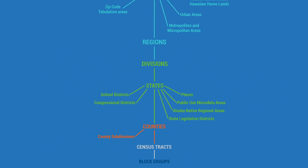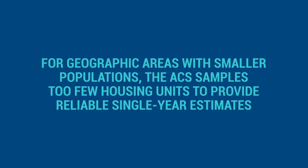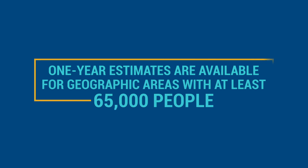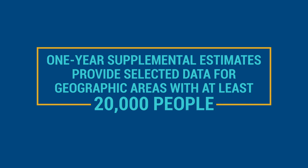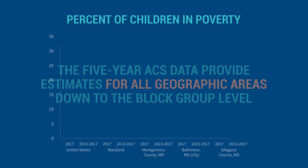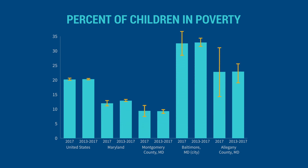The wide range of geographic areas available allows data users to drill down to describe the characteristics of their communities, how they compare with other geographic areas, and how they have changed across time. For geographic areas with smaller populations, the ACS samples too few housing units to provide reliable, single-year estimates. One-year estimates are available for geographic areas with at least 65,000 people, and one-year supplemental estimates provide selected data for geographic areas with at least 20,000 people. The five-year ACS data provide estimates for all geographic areas down to the block group level.